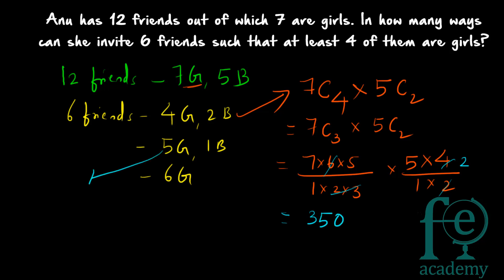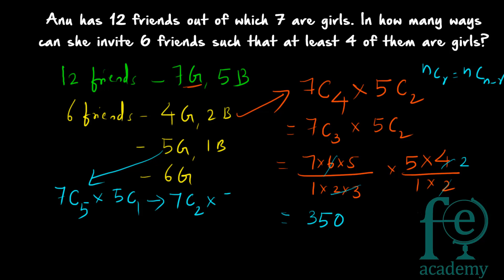Case 2: 5 girls and 1 boy. Select 5 from 7 girls: 7C5 = 7C2. Select 1 from 5 boys: 5C1 = 5. So 7C2 × 5C1 = (7 × 6)/(1 × 2) × 5 = 21 × 5 = 105.